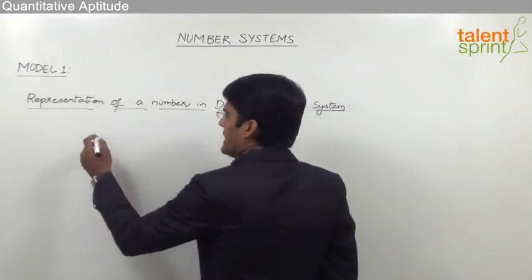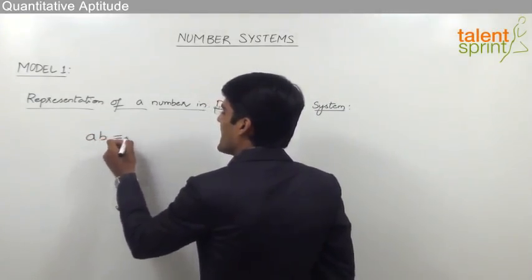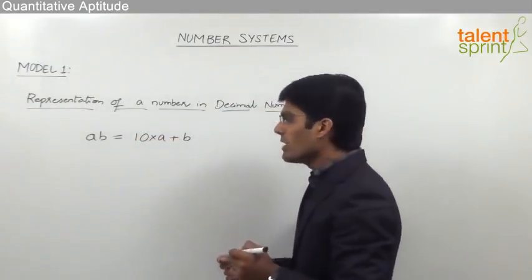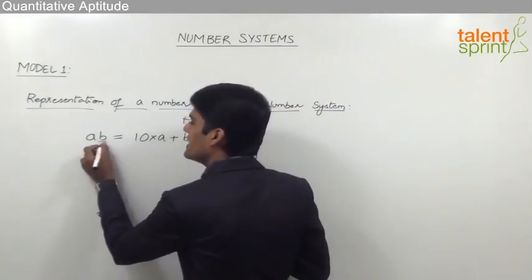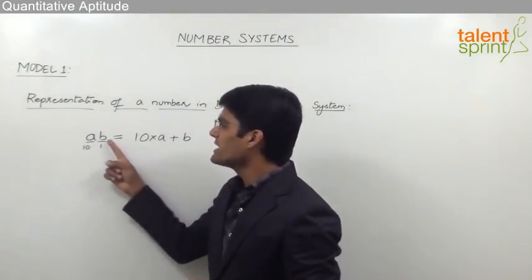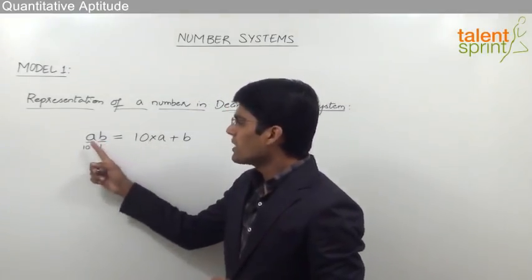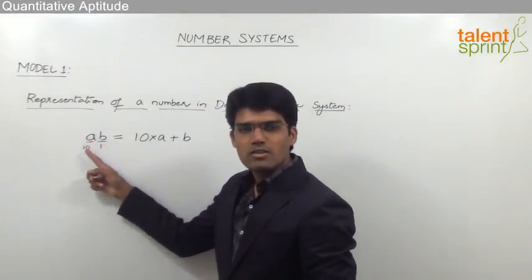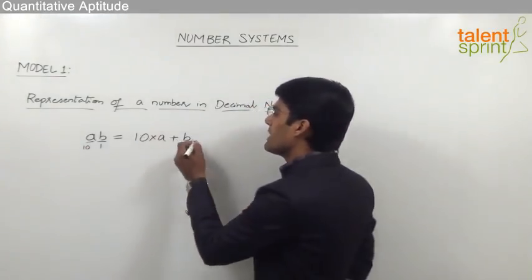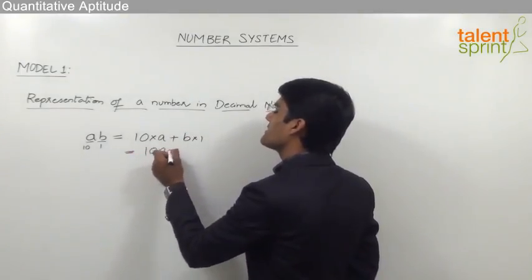Any two-digit number AB should always be taken as 10 times A plus B. The digit B is in the units place and is multiplied by 1, while the digit A is in the tens place and is multiplied by 10. So the two-digit number AB is represented as 10A plus B.